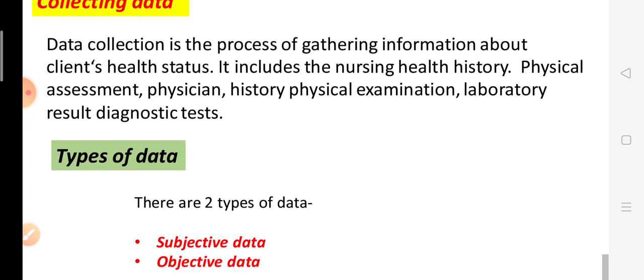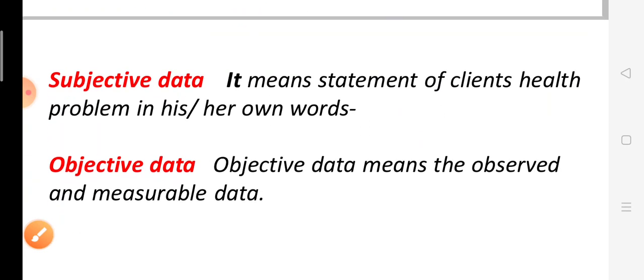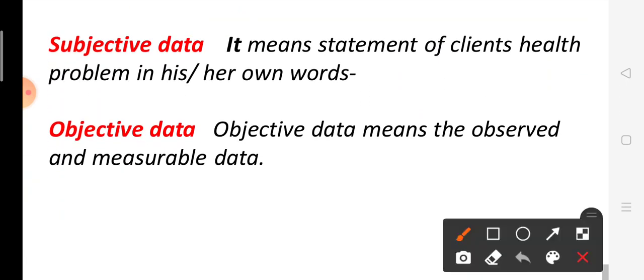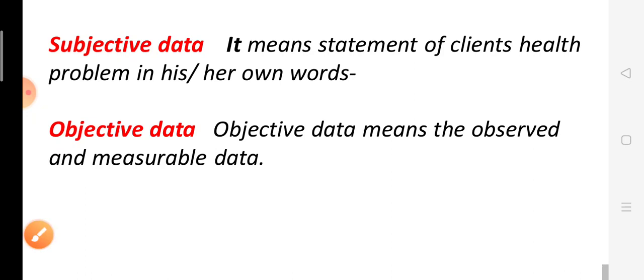Types of data: there are two types of data — subjective data and objective data. Subjective data is the client's statement of a problem in his or her own words. Objective data is what the nurse observes about the client's problem.